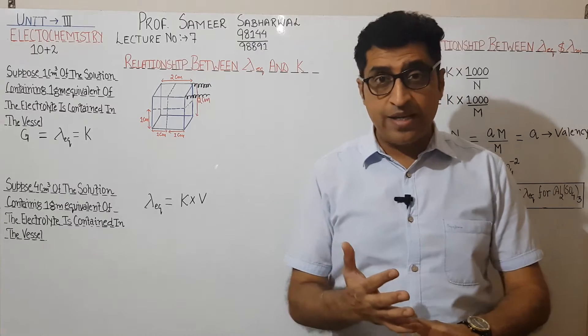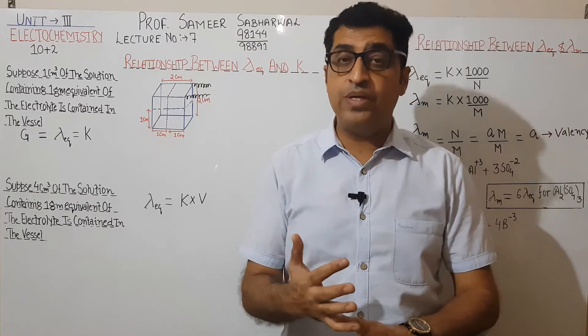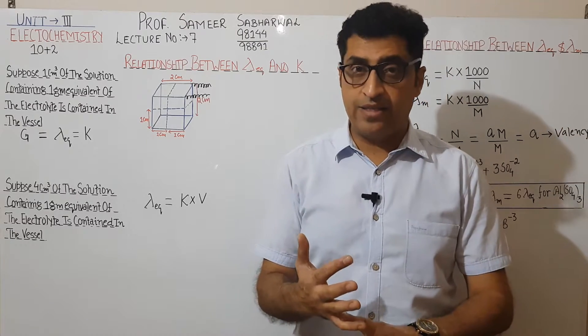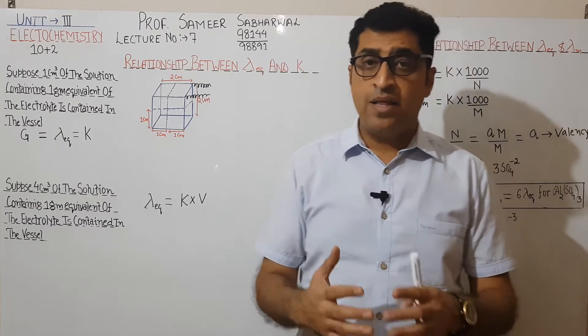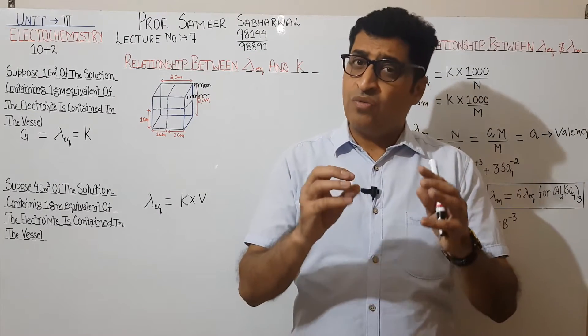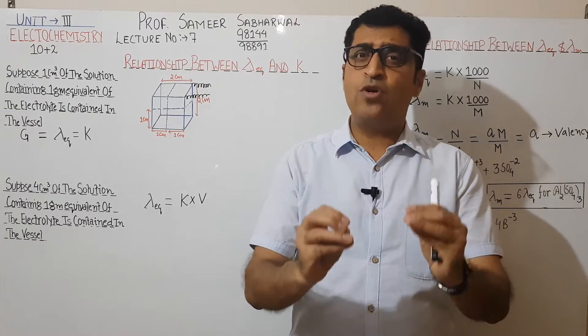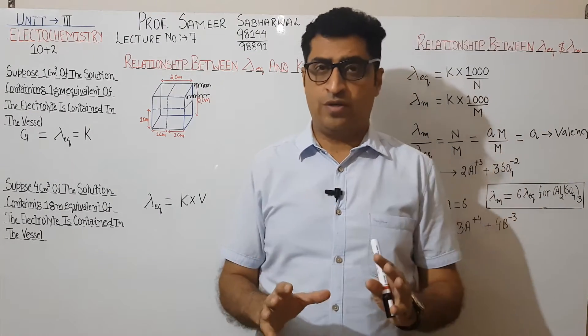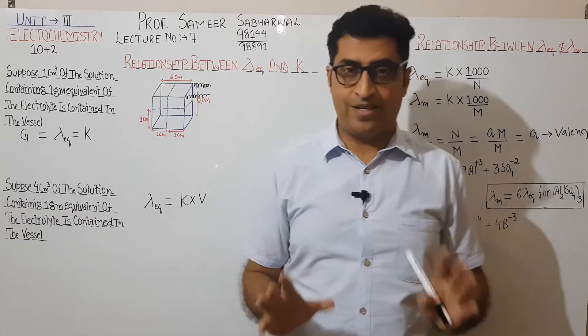K is specific conductance, represented by kappa. It is the conductance of 1 centimeter cube of the solution of that electrolyte.